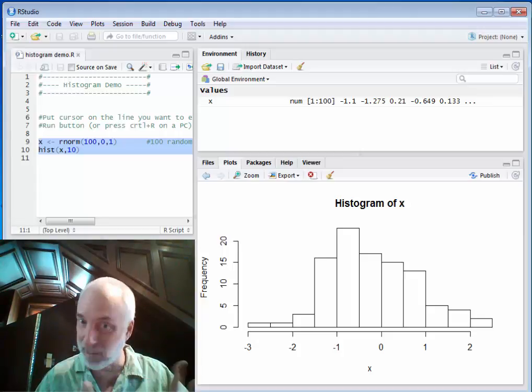If this was all you had, this one set of data, would you look at that histogram and say, oh yeah, that's normal, sure, no problem? Or would you think, well, maybe it's skewed.